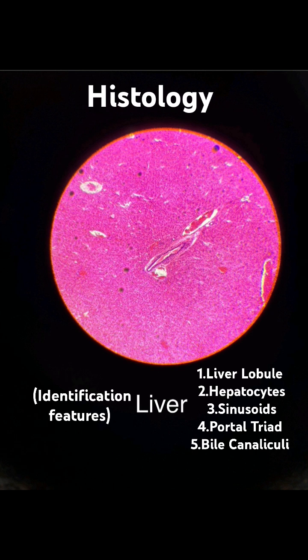Hepatocytes: 1. Polyhedral shape. 2. Large, round nuclei. 3. Abundant cytoplasm. 4. Sinusoidal surface microvilli.